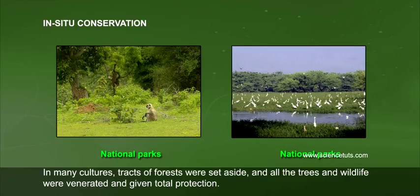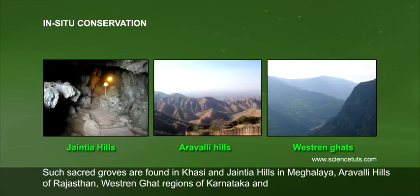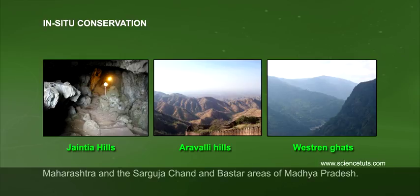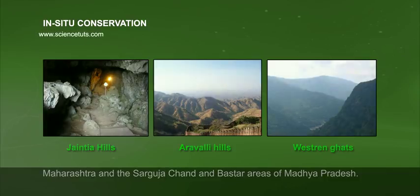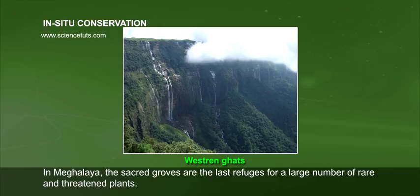In many cultures, tracts of forests were set aside and all the trees and wildlife were venerated and given total protection. Such sacred groves are found in Khasi and Jaintia hills in Meghalaya, Aravalli hills of Rajasthan, western Ghats region of Karnataka and Maharashtra, and the Sarguja and Bastar areas of Madhya Pradesh. In Meghalaya, the sacred groves are the last refuges for a large number of rare and threatened plants.